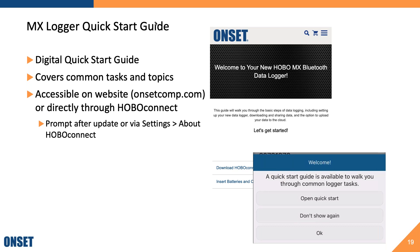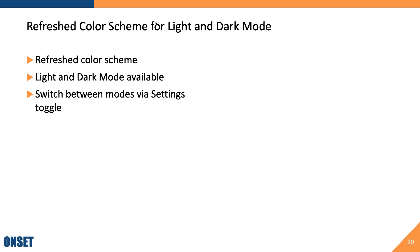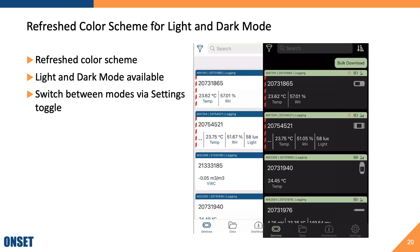You'll also notice that we've refreshed the color scheme for both light and dark mode. I'll be mixing and matching screenshots as we walk through this presentation. You can use whichever mode you'd like and switch between the two modes without restarting the app, via the dark mode toggle found under Settings.